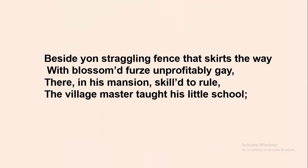The poem goes: 'Beside yon straggling fence that skirts the way, with blossomed furze unprofitably gay, there in his mansion skilled to rule, the village master taught his little school.' The poet is talking about a school in the village, on the outskirts of a residential area, with just a straggling fence in the corner. There is a small mansion where a person skilled to rule teaches — the village master who ruled through his vast knowledge.